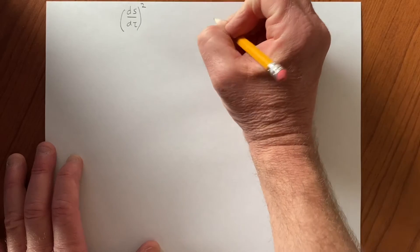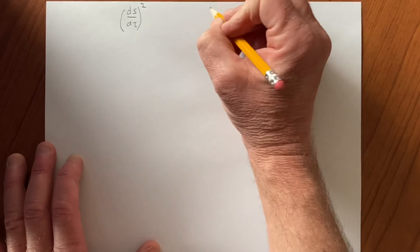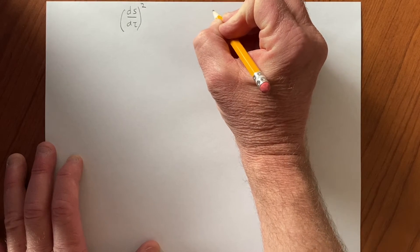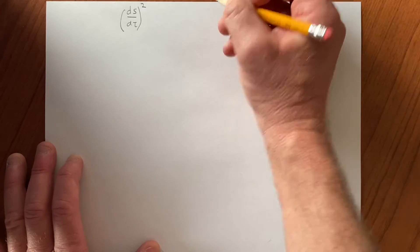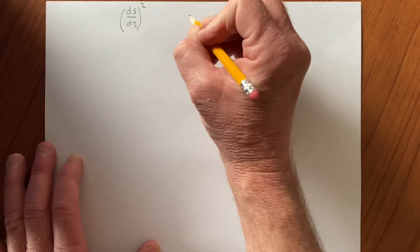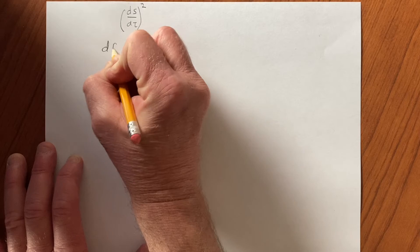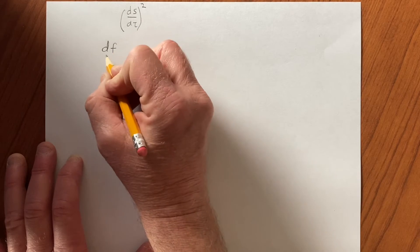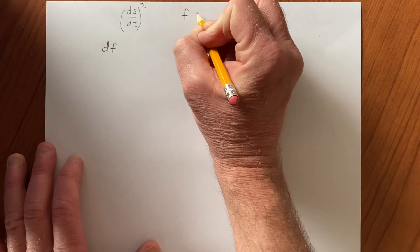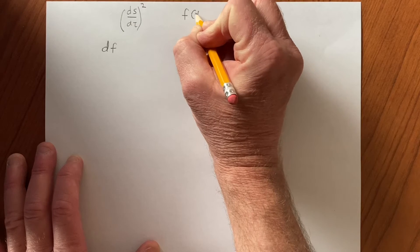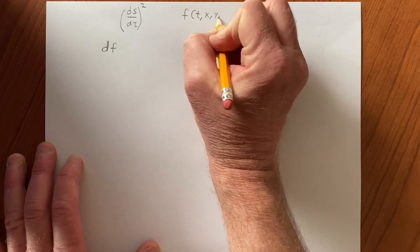Let's consider the rate of change of a function f with respect to a parameter, maybe the same parameter, proper time. So df—that's a scalar function anyway, so f is some function of t, x, y, z.